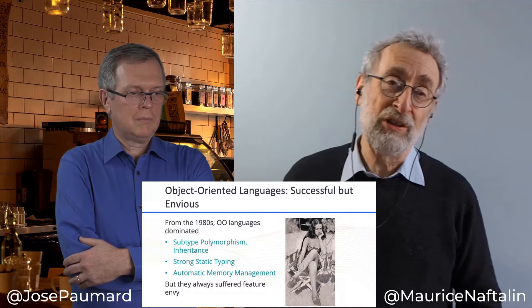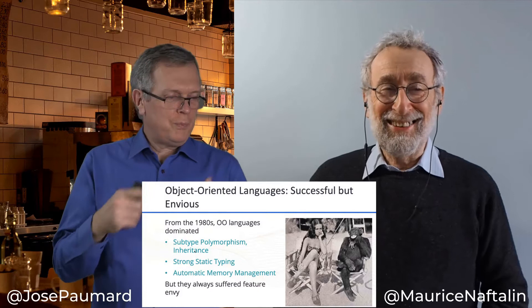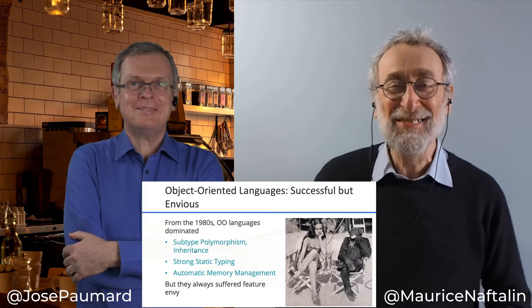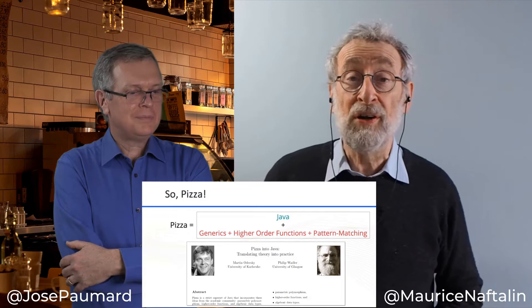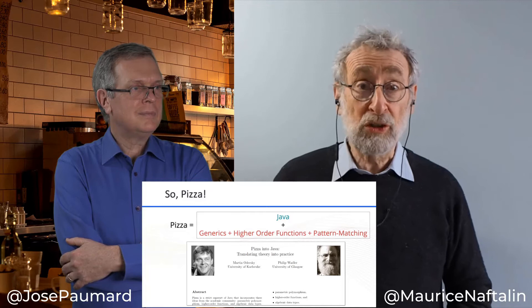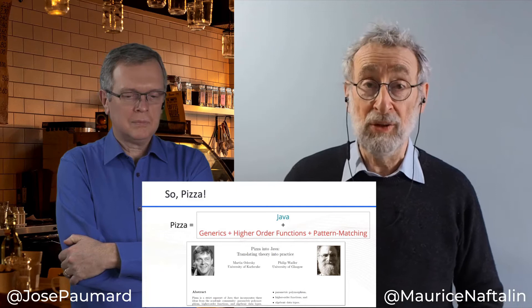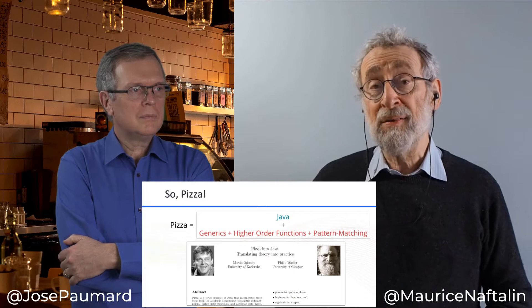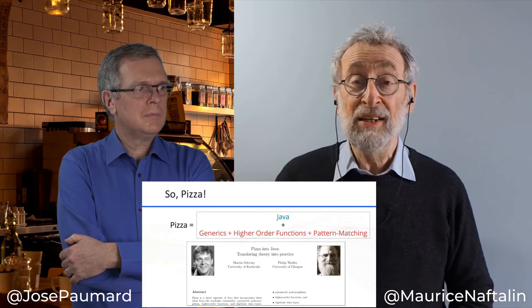But for all of that, object-oriented languages have always suffered from feature envy when they look at functional languages. Very early on in the evolution of Java, in 1997, my friend Phil Wadler, a well-known functional programming academic, was told by a student that he should pay attention to a new language called Java. Together with Martin Odersky, who went on to develop Scala, they created a proof of concept called PIZZA, showing how it would be possible to add three features of functional programming languages into the newborn Java.